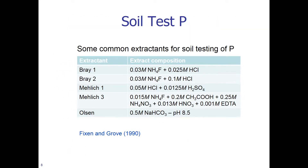Here are some of the common extractants for soil testing of P: Bray 1, Bray 2, Mehlich 1, Mehlich 3, and Olsen. You will notice that the extract composition is very different for all these extractants, and the choice is dependent on the soil type. These are just examples of common extractants for soil testing of P.